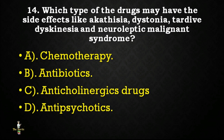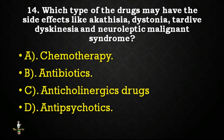Next question: which type of drugs may have side effects like akathisia, dystonia, tardive dyskinesia, and neuroleptic malignant syndrome — chemotherapy, antibiotics, anticholinergic drugs, or antipsychotics? Correct answer is antipsychotics.